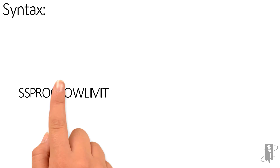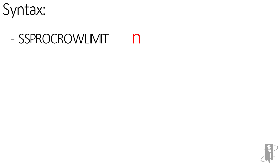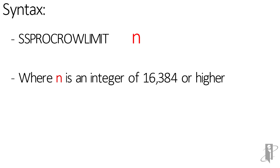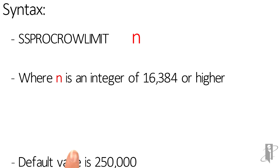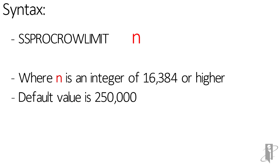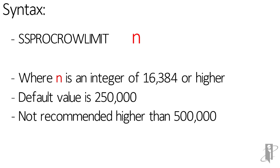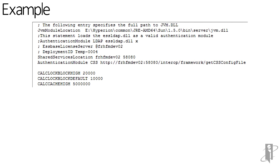The syntax for this setting is SSPROCROWLIMIT followed by an integer. Oddly, the integer has to be higher than 16,384. If there is a typo in your syntax, the S-Space server will ignore your configuration line and the default of 250,000 rows will be used. The recommended maximum is 500,000 rows, as Oracle does not recommend going higher. An example of how the configuration setting would look is shown here.